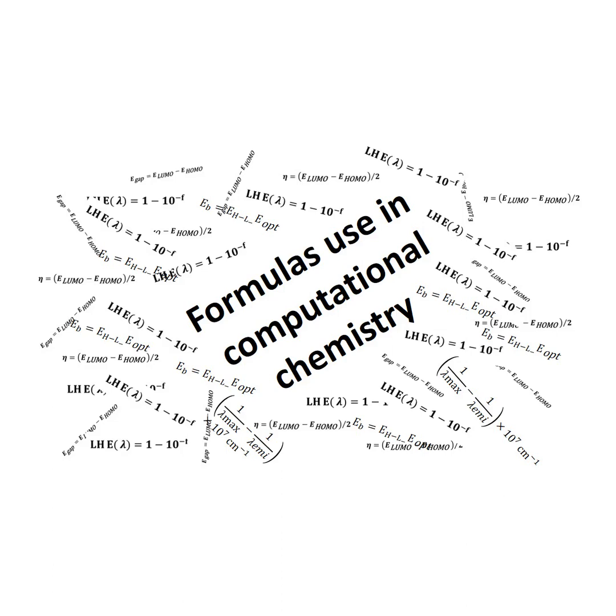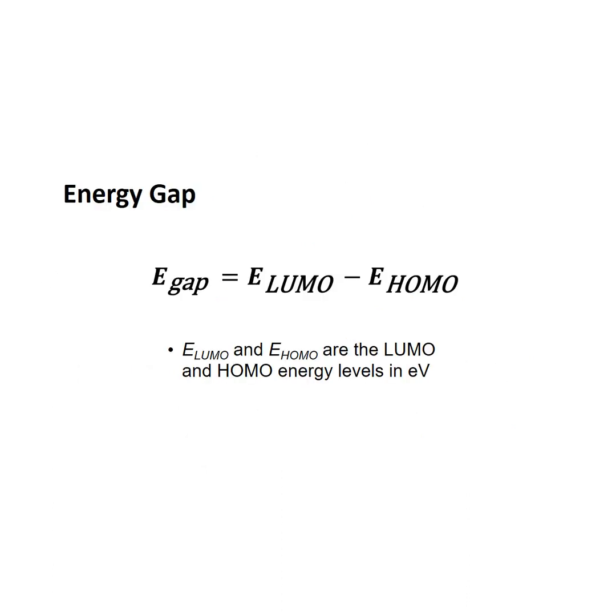Most important formulas used in computational chemistry for calculation. Energy Gap: E_LUMO and E_HOMO are the LUMO and HOMO energy levels in electron volts.